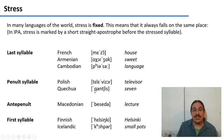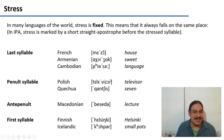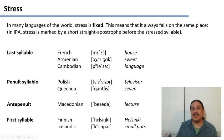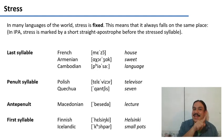In some languages the stress is assigned on the penultimate syllable — the second to last. In Polish we get 'telewizor' for TV, or 'muzika' for music, stressed on the penultimate. In Quechua from Peru we get 'qanjis' meaning 'seven.' If the word is just one syllable long you get stress on that syllable, but if you have at least two syllables you get it on the penultimate one.